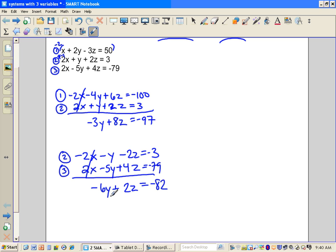Now I have just a y and a z and a y and a z. I can do a linear combination with just those two equations. Let's multiply this equation by negative 2, so that we have a positive 6y, a negative 16z, and let's see, 97, negative 194, I believe.